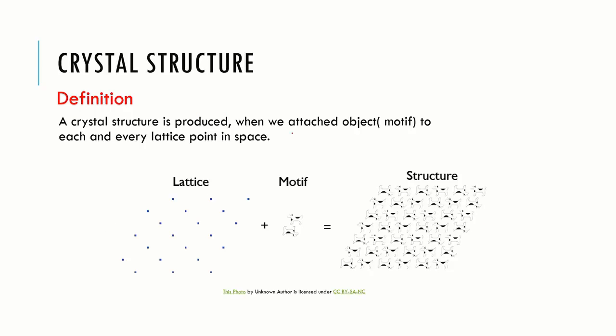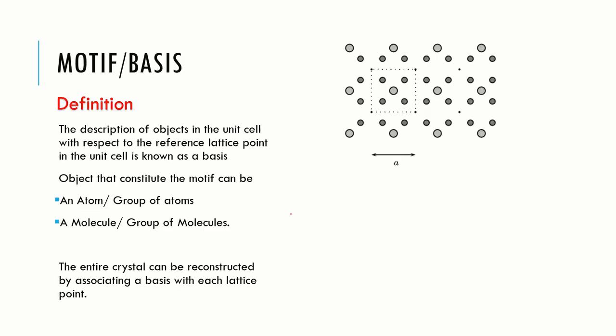So far, we discussed about the lattice and the unit cell generating the lattice. A crystal structure is produced when we attach a motif to each and every lattice point in the space. The description of objects in the unit cell with respect to the reference lattice point is known as basis. The object that constitutes the motif can be an atom or group of atoms, a molecule or group of molecules.